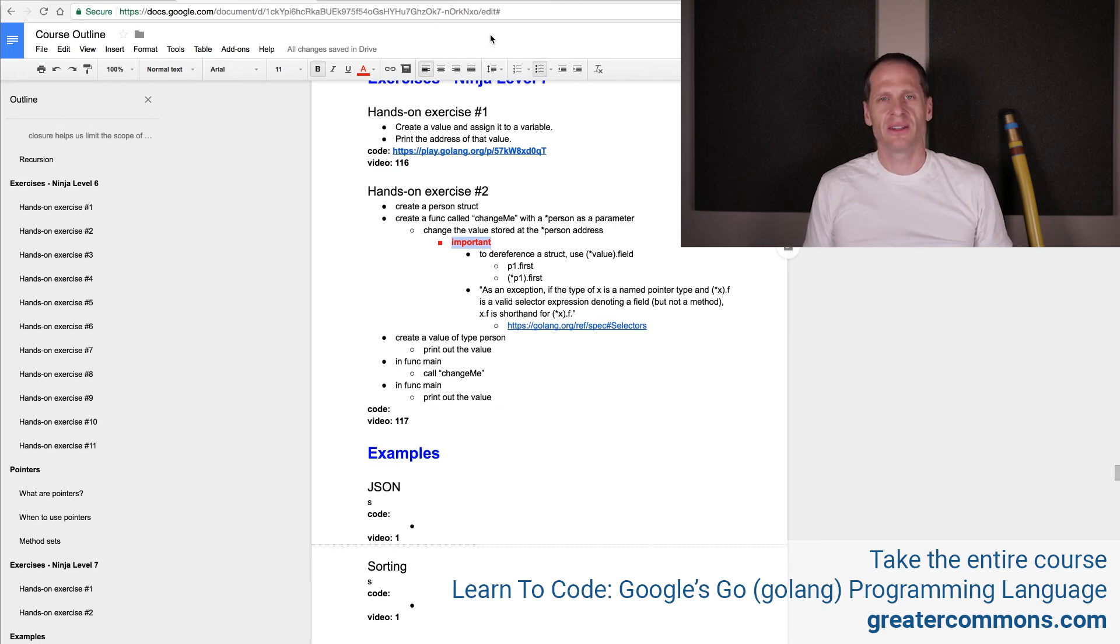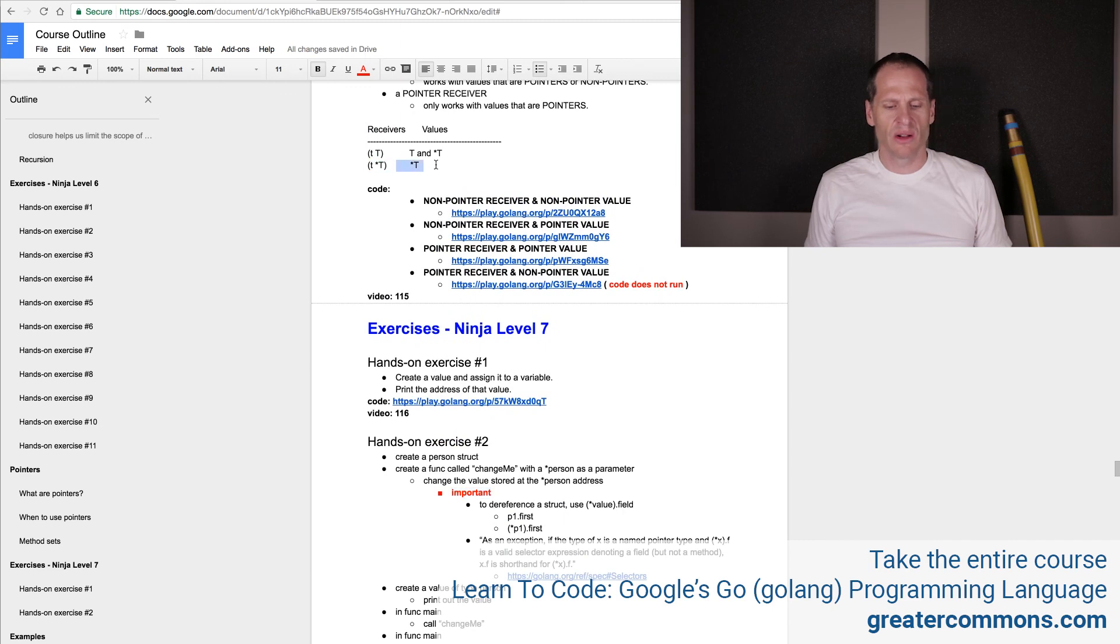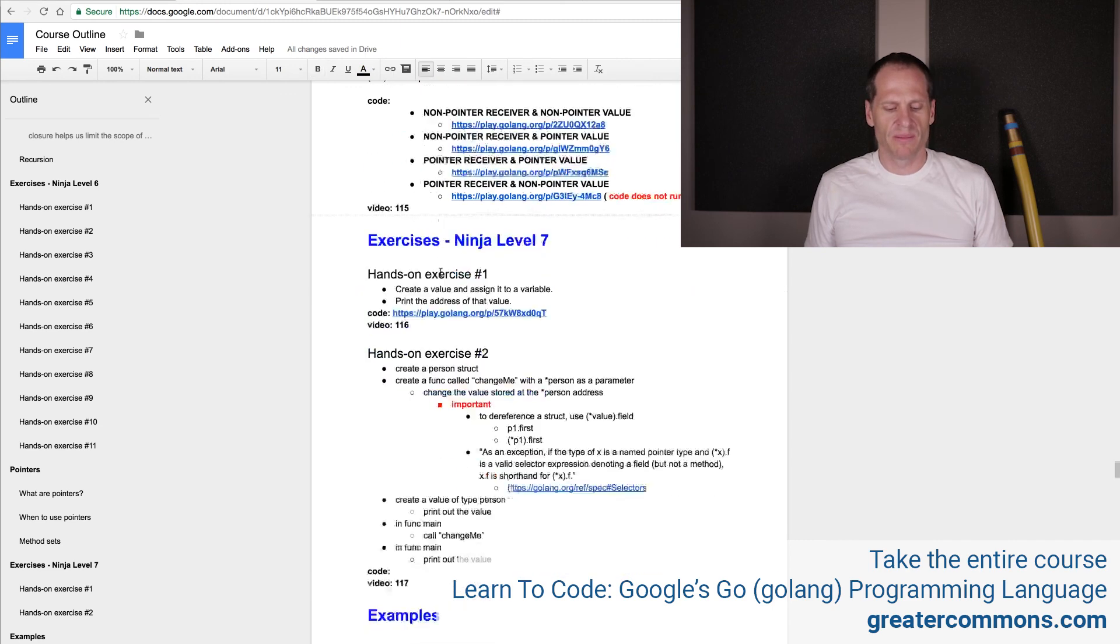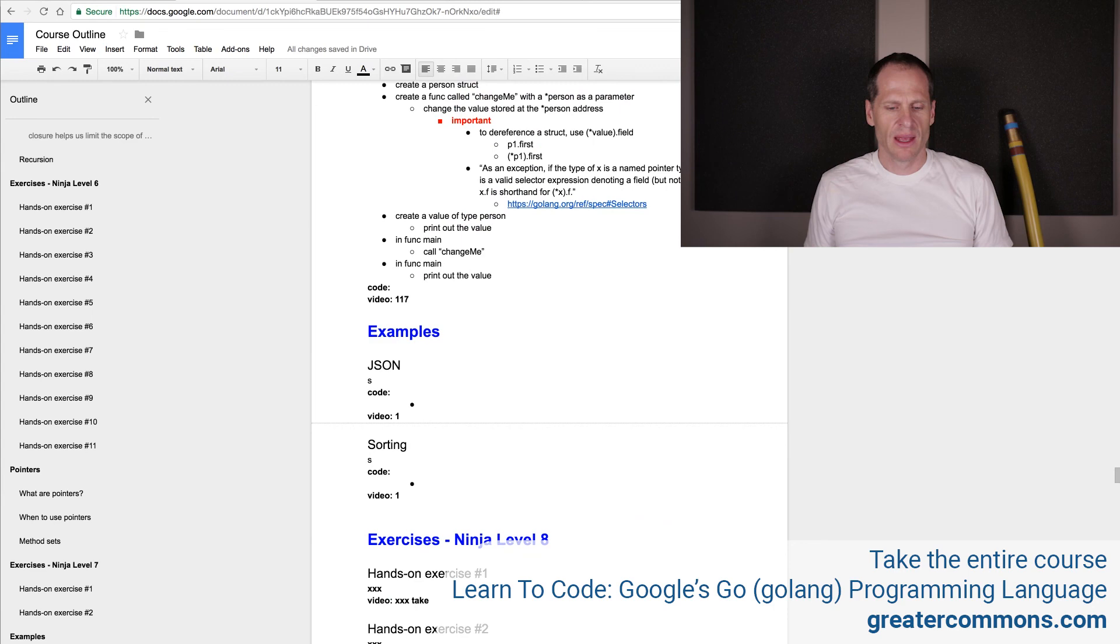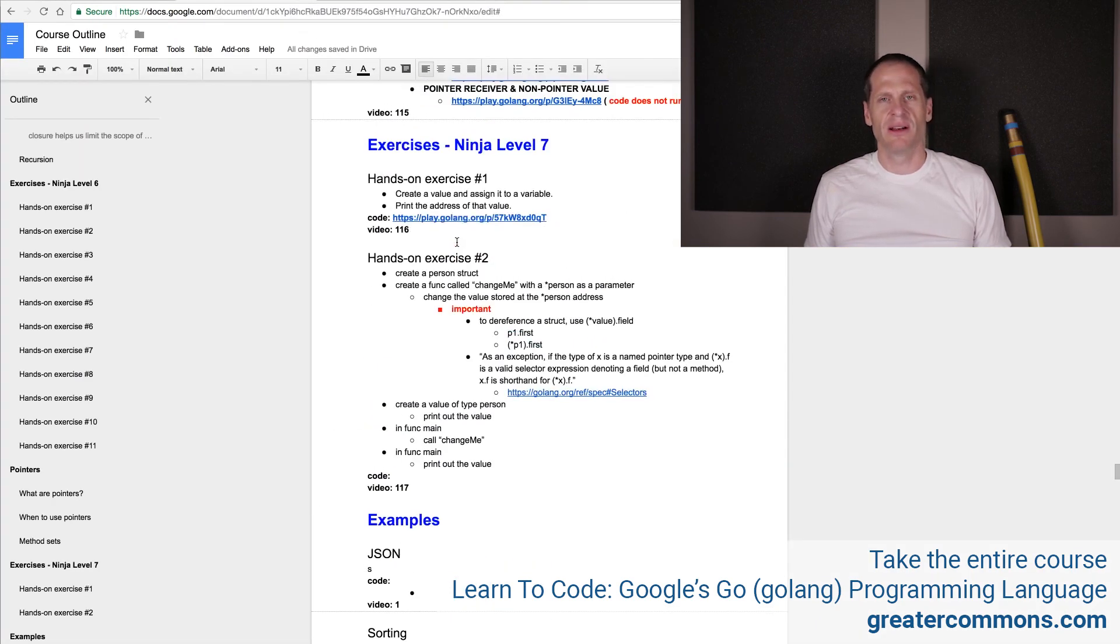Taking an address, understanding like the pointer to some type, sort of pointer to an int, pointer to a type person. And then also understanding that the asterisk dereferences an address and lets you work with the value at that address. Those are the important things to understand about pointers. That and method sets. If you use a pointer receiver, then it can only be used with values of type pointer. That's also important. That's hands-on exercise number two. You've now reached ninja level, level number seven. Congratulations.